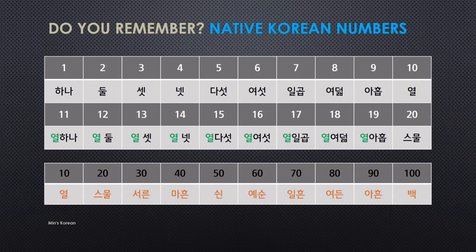Then what about 11? You can just repeat: 열 하나. And 12 is 열 둘, 13 is 열 셋, 14 is 열 넷, 15 is 열 다섯, 16 is 열 여섯, 17 is 열 일곱, 18 is 열 여덟, 19 is 열 아홉, and 20 is 스물. So 10 is 열, and 20 is 스물. And 21 is 스물 하나 — same pattern, you can just repeat.